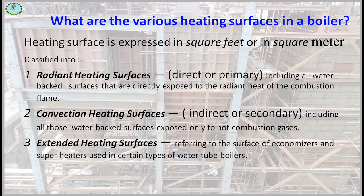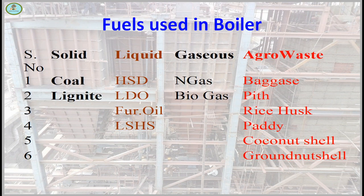The third one is extended heating surface, for example economizer and super heater. It is used in certain types of water tube boilers.